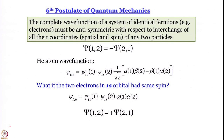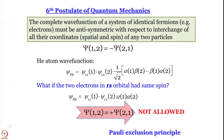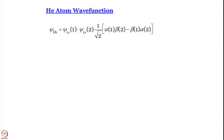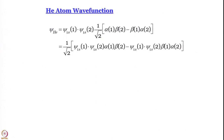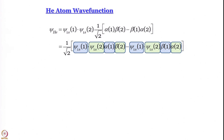If two electrons in the 1s orbital have the same spin — say α(1)α(2) multiplied by ψ₁ₛ(1)ψ₁ₛ(2) — this is symmetric with respect to exchange. Since it is symmetric, it does not satisfy the sixth postulate of quantum mechanics. Upon applying the exchange operator, you get back the same wave function with no change in sign — so it is not allowed. The only thing that is allowed is [α(1)β(2) − β(1)α(2)]/√2.